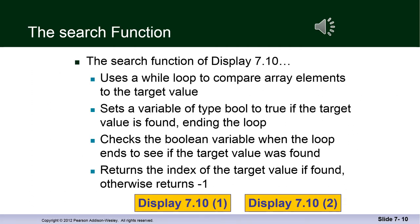The search function, which we'll look at in display 7.10, uses a loop to compare array elements to the target value. And it sets a variable of type bool to true. The target value is found ending the loop. It checks the boolean variable when the loop ends to see if the target value is found and returns the index of the target value if found, otherwise minus one.